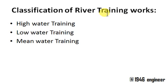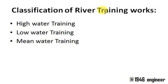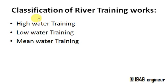River training works are classified based on high water training, low water training, and mean water training. High water training deals with excessive discharge — when there are floods, the river training works that deal with high discharge or flood conditions fall under this category.